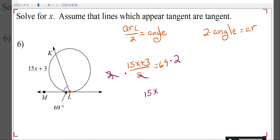I get 15x plus 3 equals 138 minus 3 minus 3. I get 15x is equal to 135. I divide both sides by 15. That says x equals 9.